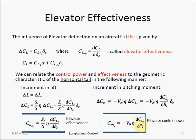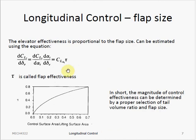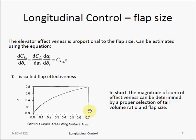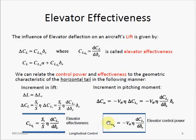The term dCL/d_delta_e of the horizontal tail can be approximated by an equation where CL_alpha_t is the lift curve slope contribution from the tail and tau is the flap effectiveness. The flap effectiveness tau can be computed either by using a reference graph or by using an equation, and it is based on the size of the flap with respect to the size of the horizontal tail. The magnitude of the control effectiveness and control power can be determined by a proper selection of the tail volume ratio Vh and the flap size.